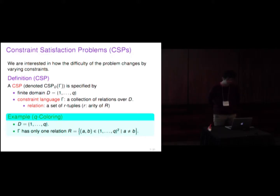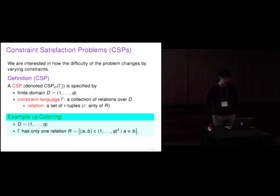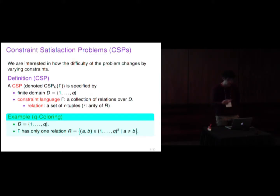Let's see an example. For coloring with Q colors, the domain D is the set from 1 to Q. And gamma has only one relation R consisting of tuples (A, B) such that A is not equal to B. This expresses the constraint that adjacent variables must have different colors.